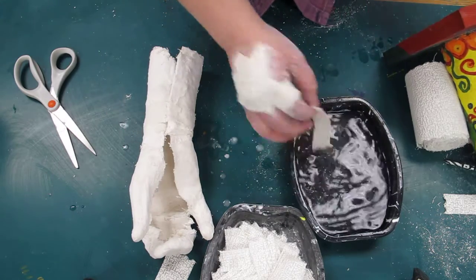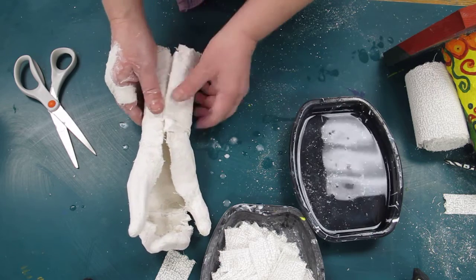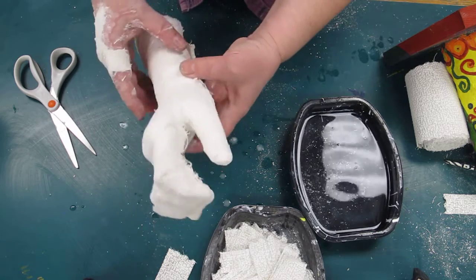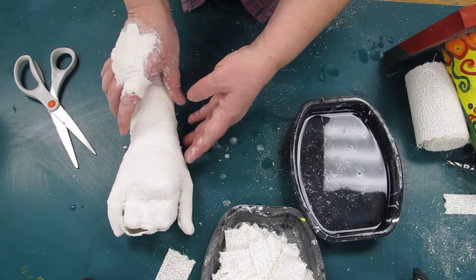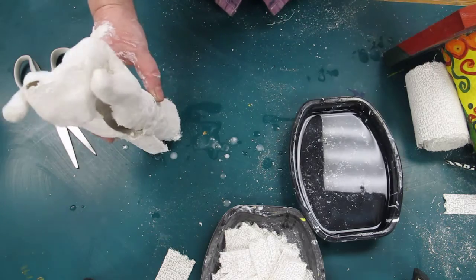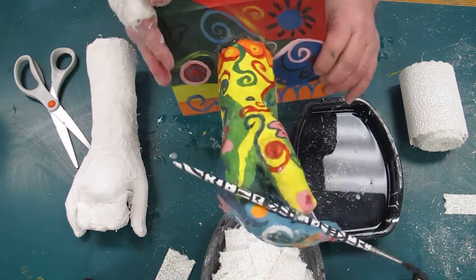So we're going to add plaster bandage, spread out that plaster. That's what's the good stuff there. Kind of smooth it out. Once you're all done, you can set it over there to dry and set up. We'll get some bases going. We'll glue it to the base and then we'll apply some acrylic paint to it to finish it up.